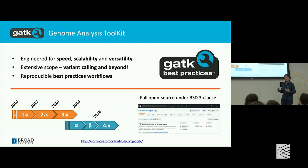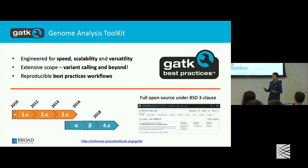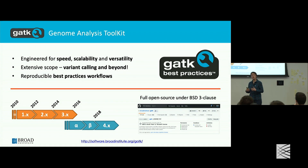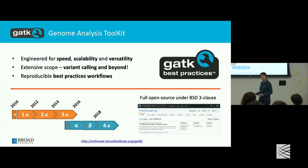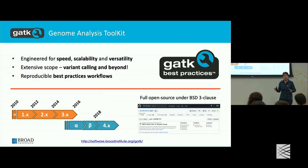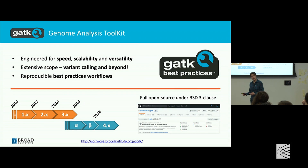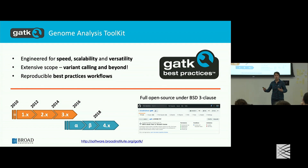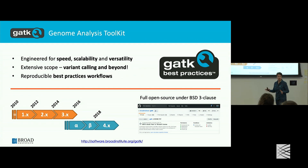GATK does a lot of things. It includes the Picard tools, which are now available from within the GATK toolkit. One of the big points of emphasis for the development team is to make it easier for people to run these tools effectively and appropriately. For all the major use cases that are supported, we have best practices workflows that implement our best recommendations. The software is fully open source and it is a command line tool with no graphical user interface, but there's been a lot of effort put into integrating the tools into workflows that can be run fairly easily on the Terra platform.